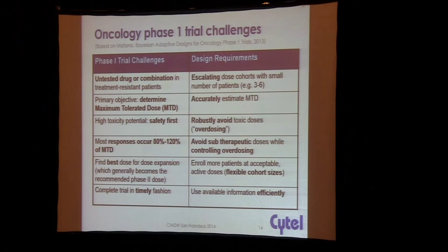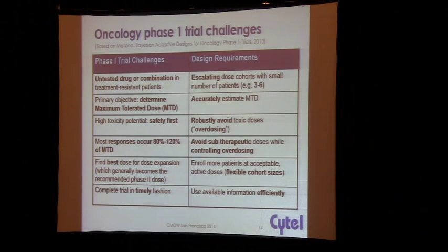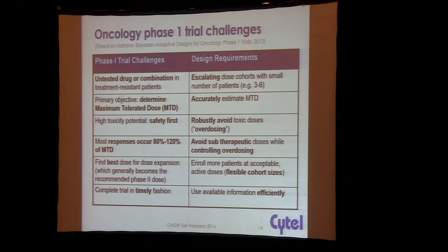Usually the primary objective historically has been determining the maximum tolerated dose, but the objective could be different. Sometimes we're looking for an optimally active biological dose. But whether you're looking for an MTD or some kind of marker for efficacy, the point is you'd like to accurately estimate that quantity as best as possible and put some certainty around your estimate. Safety is first, which is why there's a big concern about overdosing.